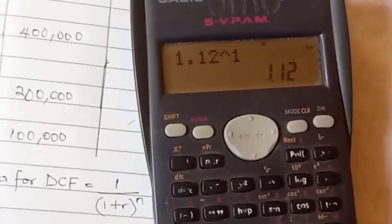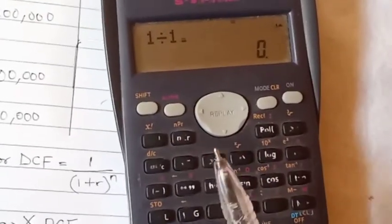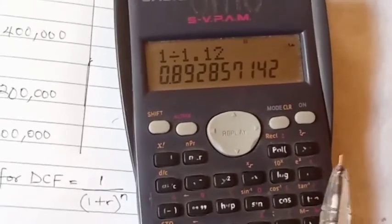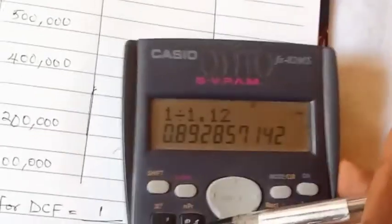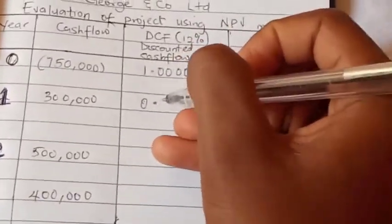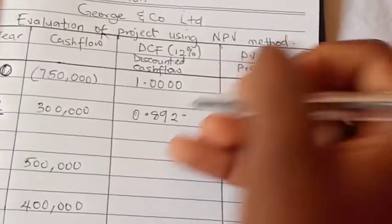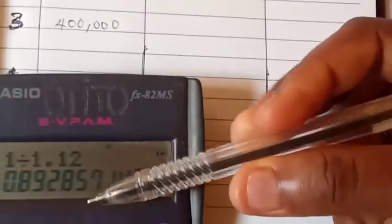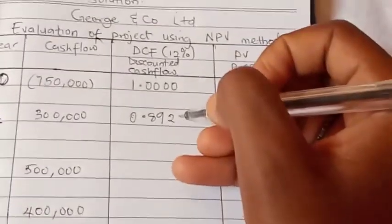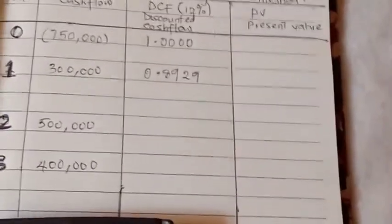So 1.12 raised to power 1, that is 1.12. So it's going to be 1 over 1.12, which is 0.8928. So we'll put it here, 0.8928. You can actually approximate it because of the 5 at the back of the 8, so it becomes 0.8929.